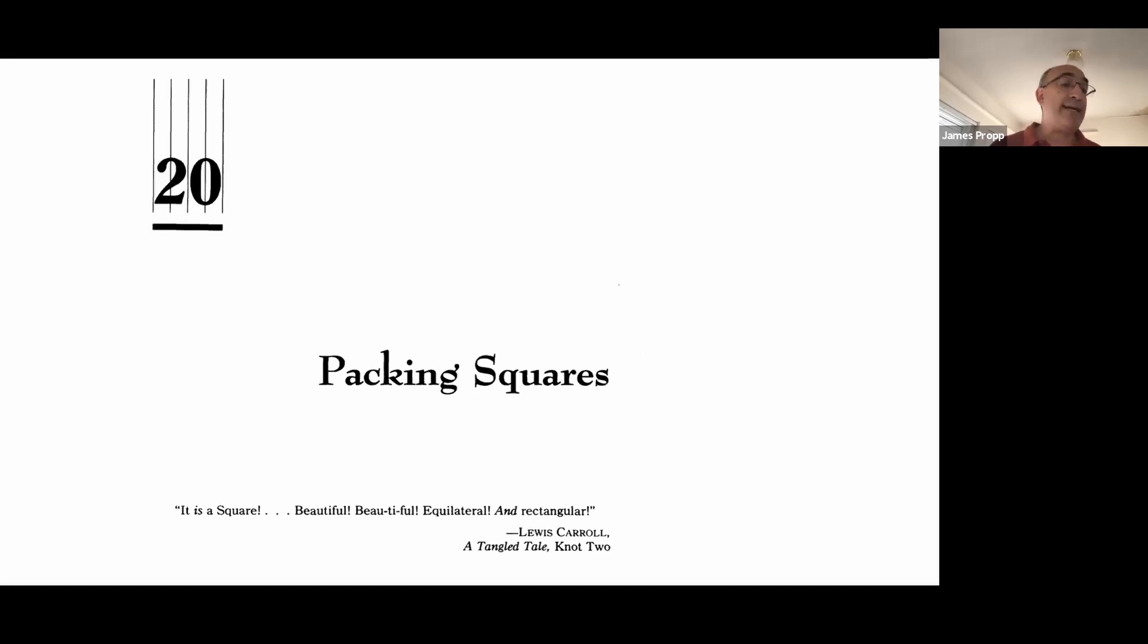When a square has side length n, with n a whole number, you can pack one by one squares into it with no wasted space. But when the side length of the big square isn't a whole number, then there's going to be a certain amount of wasted area. What if the side of the big square is n plus a half? The obvious way of packing in one by one squares gives wasted area roughly equal to 2n, which grows linearly with n.